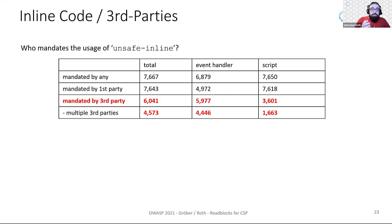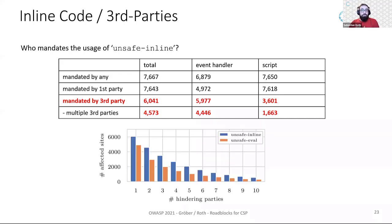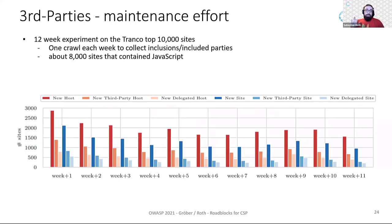Third parties mandate it either because they use inline scripts — which could in theory be allowed via nonces — but more severely, many third parties use inline event handlers, which cannot be nonced and therefore require 'unsafe-inline' to execute. Steffens' data also showed this problem is not caused by just one third party, but in many cases by multiple third parties — in some cases 10 or more parties are hindering the use of a sane CSP. Making the problem worse, those parties are not a fixed set; the exact domains a site includes fluctuate heavily.